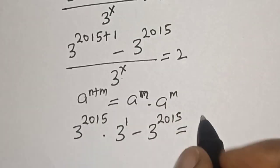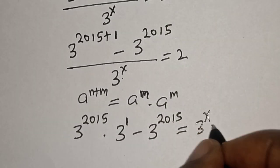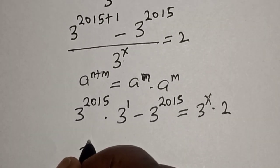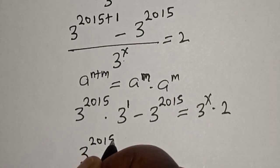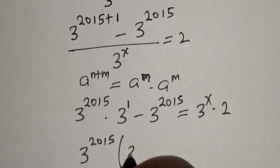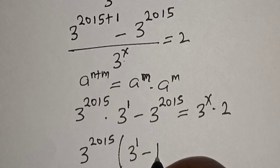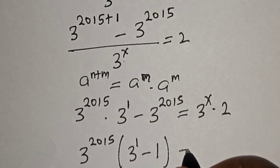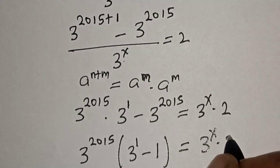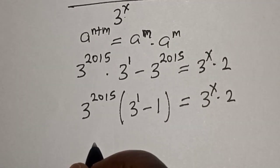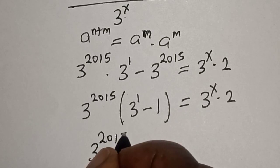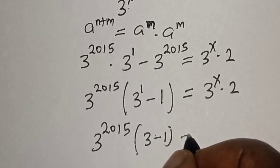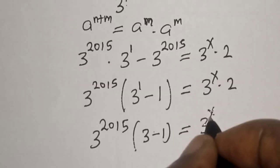Minus 3 raised to power 2015, if you multiply this, we have 3 raised to power s multiplied by 2. Then this is 3 raised to power 2015 bracket 3 raised to power 1 minus 1, that is 3 raised to power 2015 bracket 3 minus 1, equals 3 raised to power s multiplied by 2.